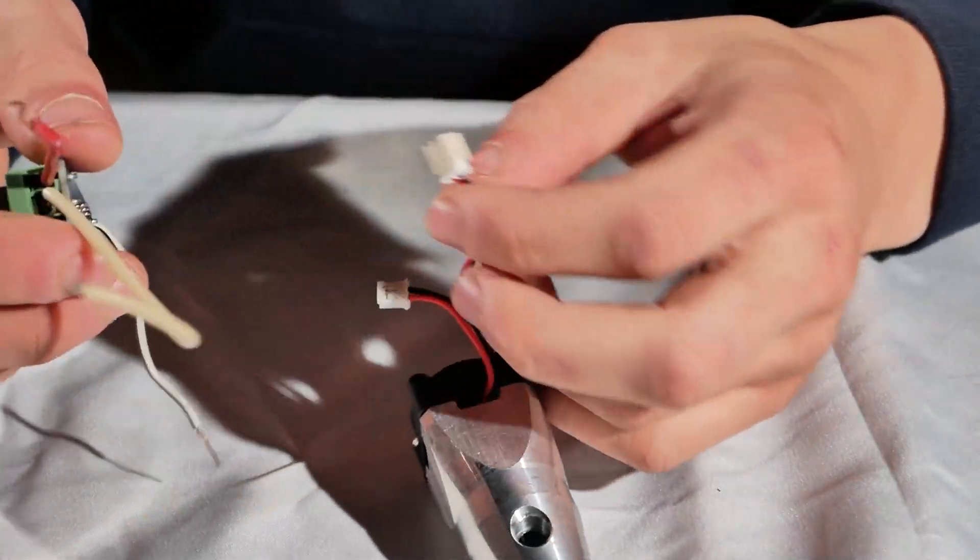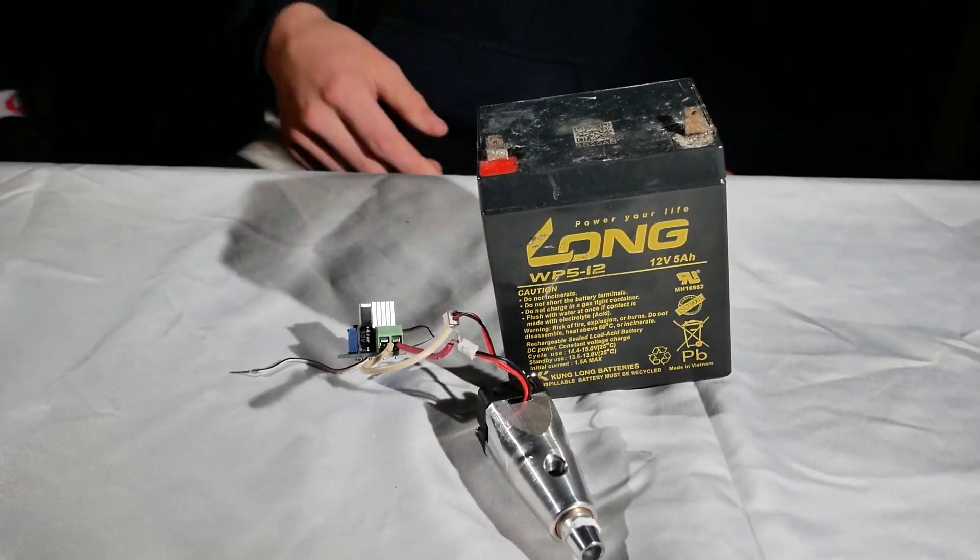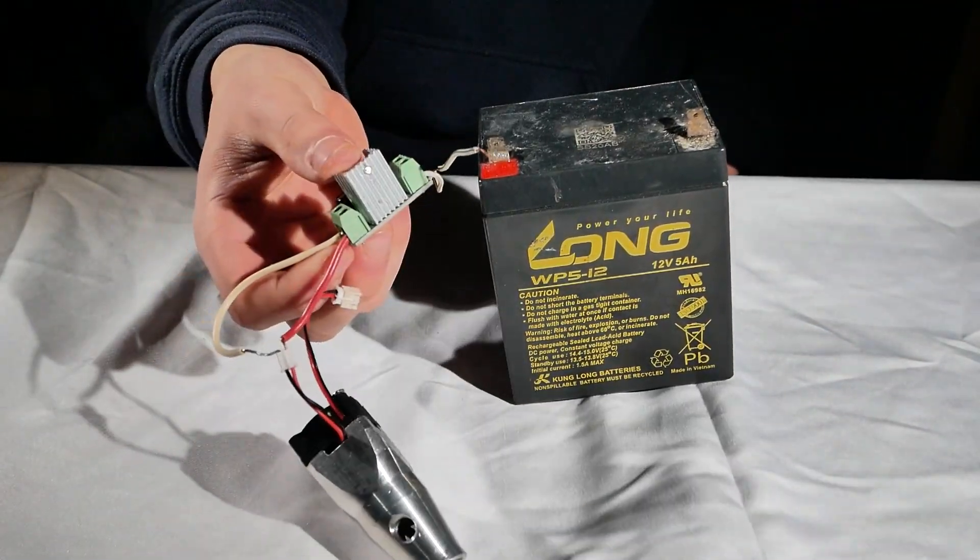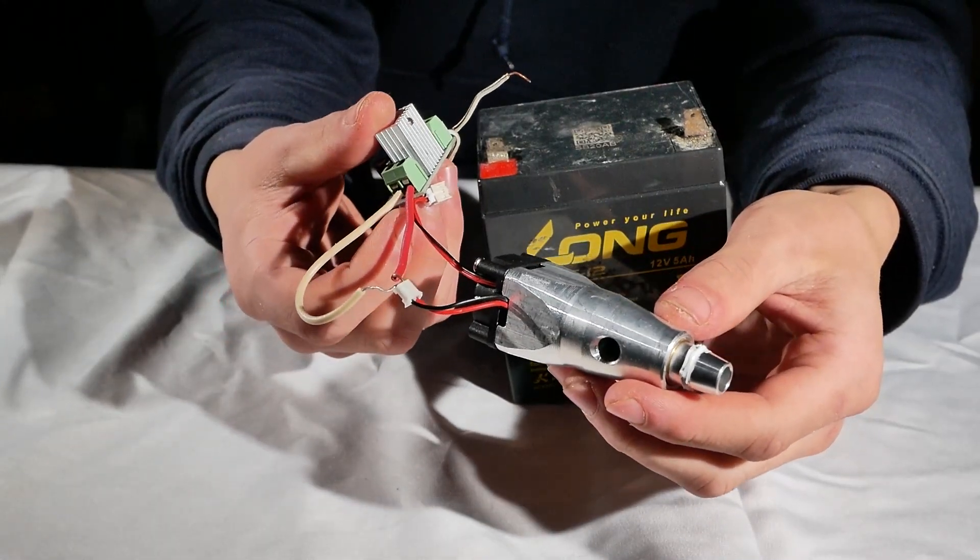So let's hook this thing up. This one's ground which is negative, and this one is positive. Here we've got a 12 volt 5 amp hour lead acid battery. We're going to connect this thing up. Unfortunately I don't have a switch on this, so it's going to turn on immediately when I connect to power.